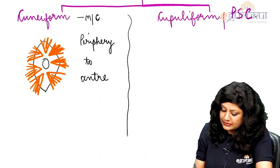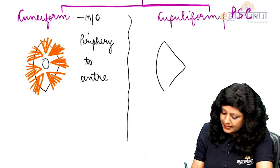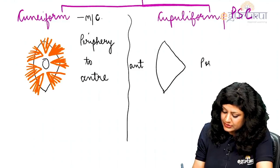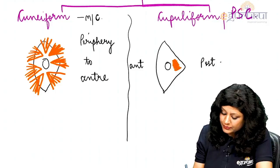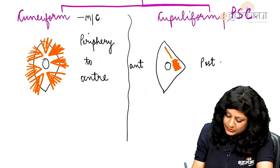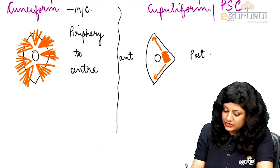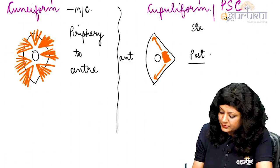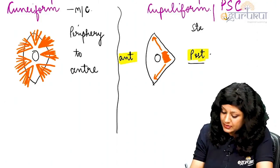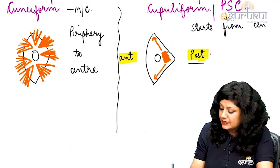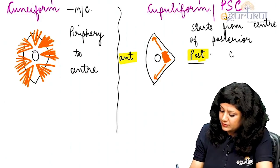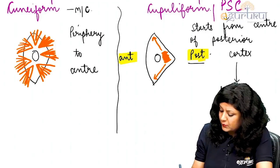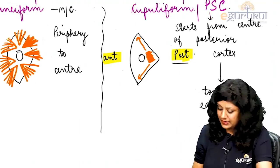In the other variety — the cupuliform — suppose this is the lens with an anterior part, a posterior part, and a nucleus. Here, opacification starts in the central part of the posterior cortex and progresses towards the equator. So this cataract starts from the center of the posterior cortex and goes towards the equator, and is called the cupuliform type of cataract.